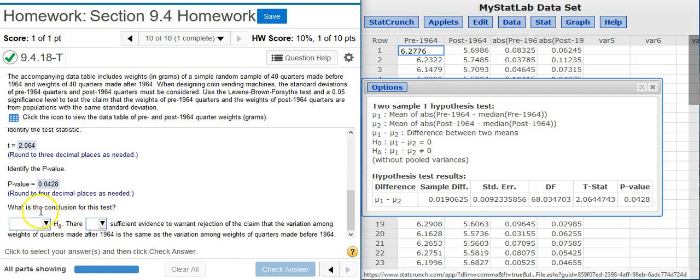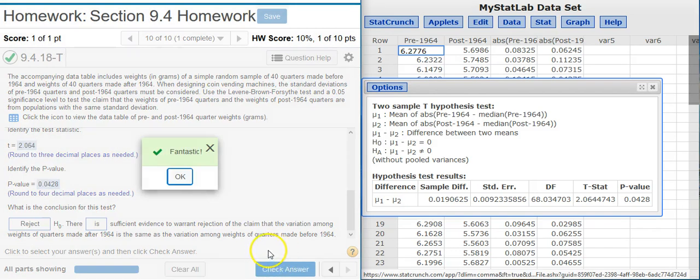And now this last part of the problem asks, what is the conclusion for this test? My p-value is a little more than 4%. We're comparing that with a 5% significance level. So the p-value is less than the significance level, which means we're inside the region of rejection. So I'm going to reject the null hypothesis. And every time I reject a null hypothesis, there is always sufficient evidence. Fantastic!